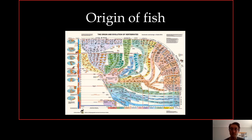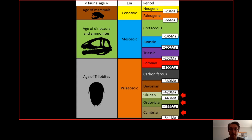Let's start with the origin of fish. This is a phylogenetic tree of vertebrates with geological age along the side, showing how vertebrates diversified through time. All vertebrates originated as fish-like animals — it all boils down to fish. This is a simplified geological time chart, and you need to know it by heart — the names and dates — there is no way around that.